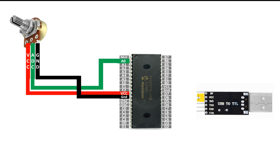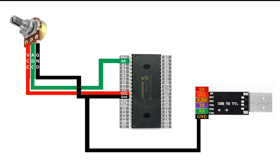Let me label the CH340 USB to TTL device. From top: 5V pin, VCC, 3.3V, TX, RX, and ground. The ground goes to the ground of the PIC. The RX pin of the CH340 goes to pin 25 of the PIC — that is RC6, which is the TX pin of the PIC. And the TX pin of the CH340 goes to pin 26 of the PIC — that is RC7, the RX pin of the PIC. There is no need to connect the power pin to the PIC because we will plug the CH340 into the computer, which will power it up.